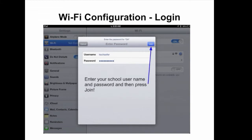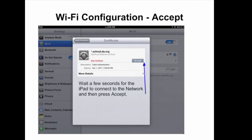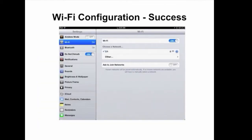Once you have chosen the DA network, you will be asked to enter in a password. Enter in your school username and password, and then press Join. It may take a few seconds, but you should have a certificate screen show up, which will ask you to accept. If you do not accept, you will not be able to connect to our protected network. This screen shows that you have been successful — you have a checkmark next to DA, and in the left-hand corner you have a good Wi-Fi signal.